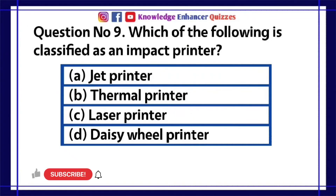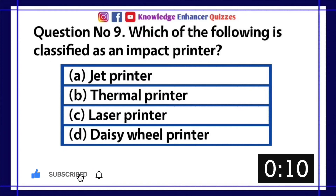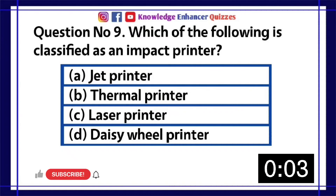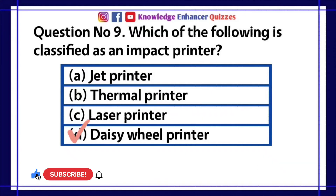Question number 9. Which of the following is classified as an impact printer? A. Jet printer. B. Thermal printer. C. Laser printer. D. Daisy wheel printer. Option D is the right answer.